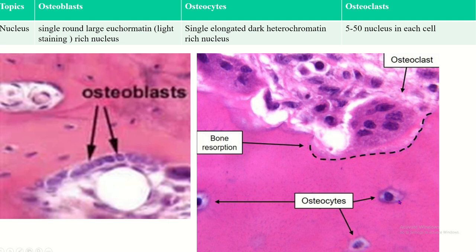The osteocyte is developed from the osteoblast and is the inactive form of the osteoblast. So its nucleus is elongated and rich in heterochromatin, which means inactive DNA. A single osteoclast may contain 5 to 50 nuclei.